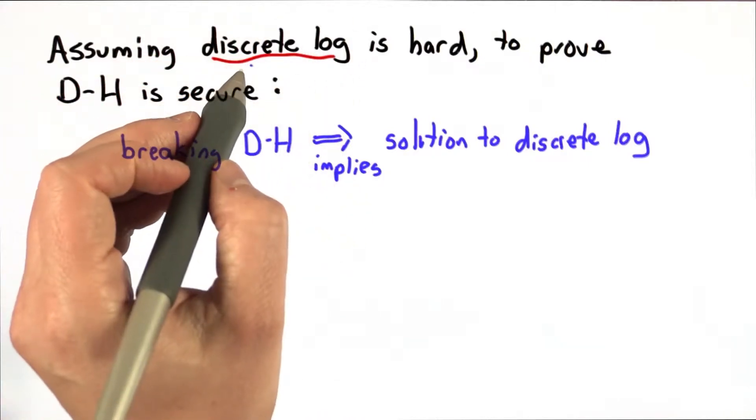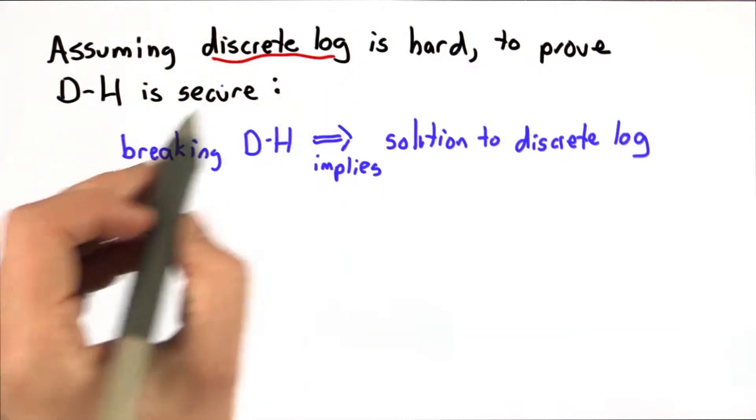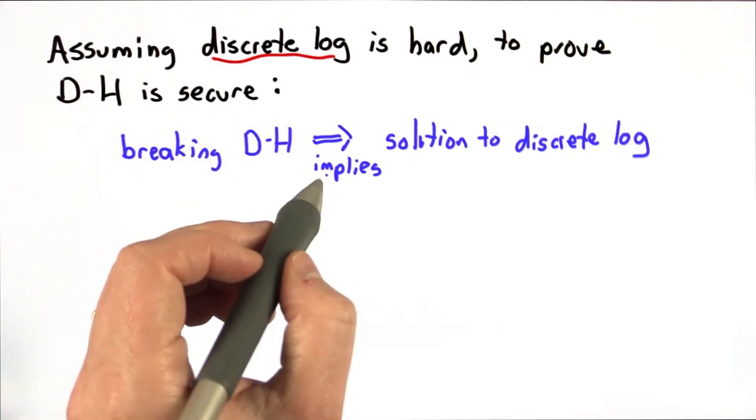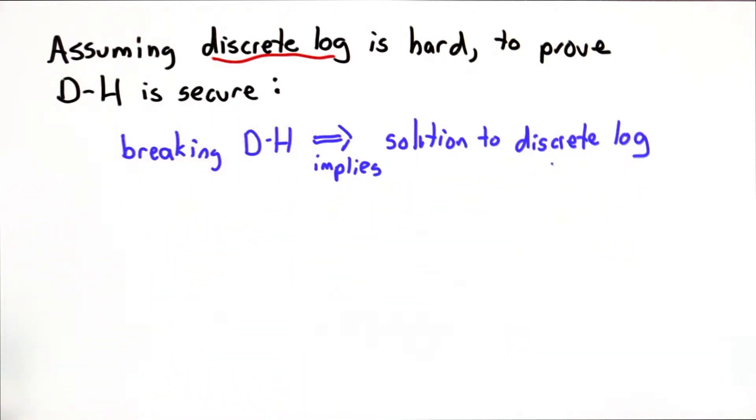If we were able to assume that discrete log is hard, then we could prove that Diffie-Hellman is secure if we could show that breaking Diffie-Hellman implies that one can also solve the discrete log problem. No one's been able to prove that.